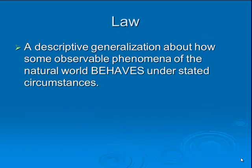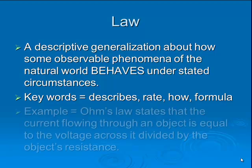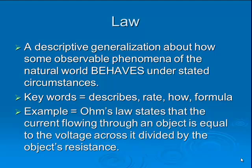A law is different than a hypothesis and also different than a theory. A law is a descriptive generalization about how some observable phenomena of the natural world behaves under stated circumstances. Laws will have key words like 'describes,' 'rate,' or 'how,' or maybe it'll be a mathematical formula. An example of a law would be Ohm's law, which states that the current flowing through an object is equal to the voltage across it divided by the object's resistance. All it's doing is stating the relationship between current, voltage, and resistance.